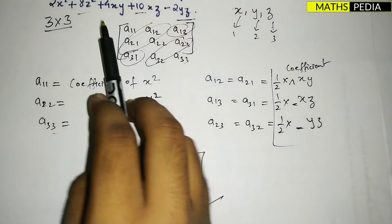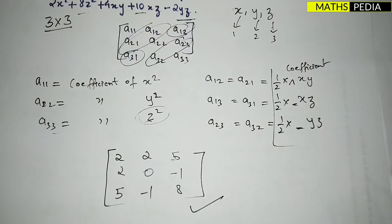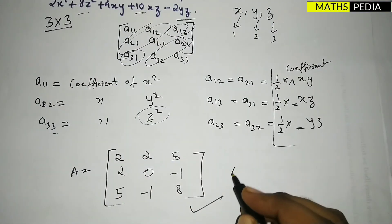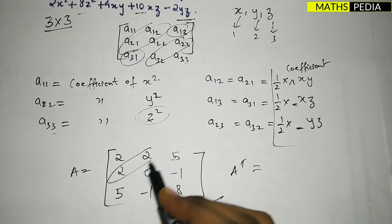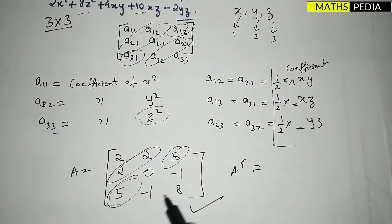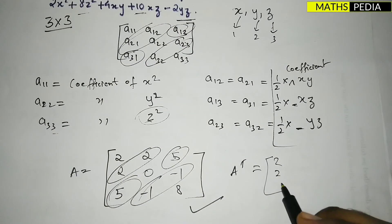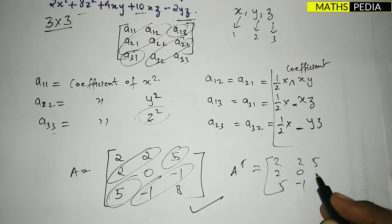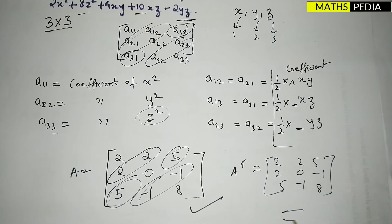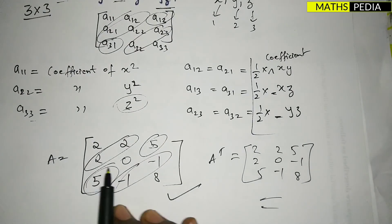We now have the complete matrix for the given quadratic form. To verify, find the transpose by interchanging rows and columns: [2, 2, 5; 2, 0, −1; 5, −1, 8]. This is exactly the same as the original matrix, confirming it is symmetric — A equals A-transpose.